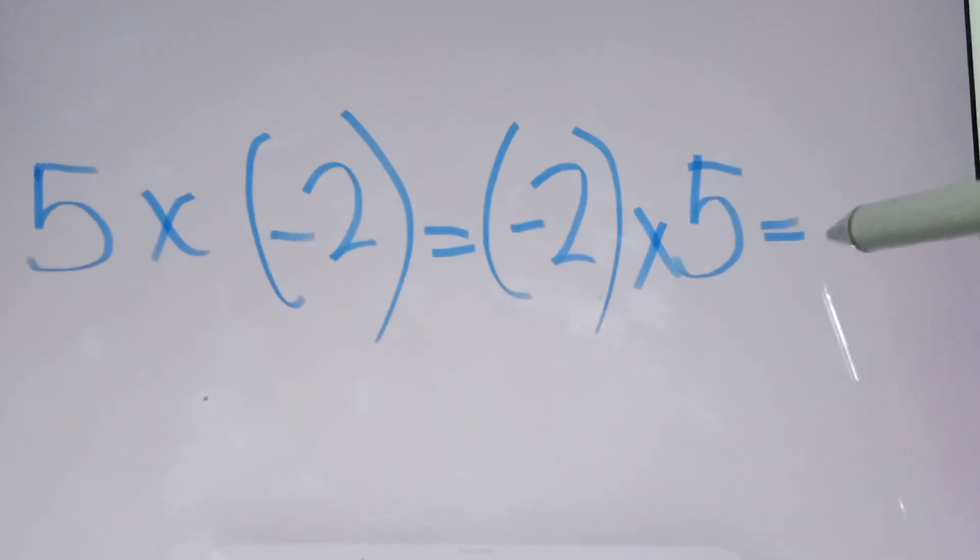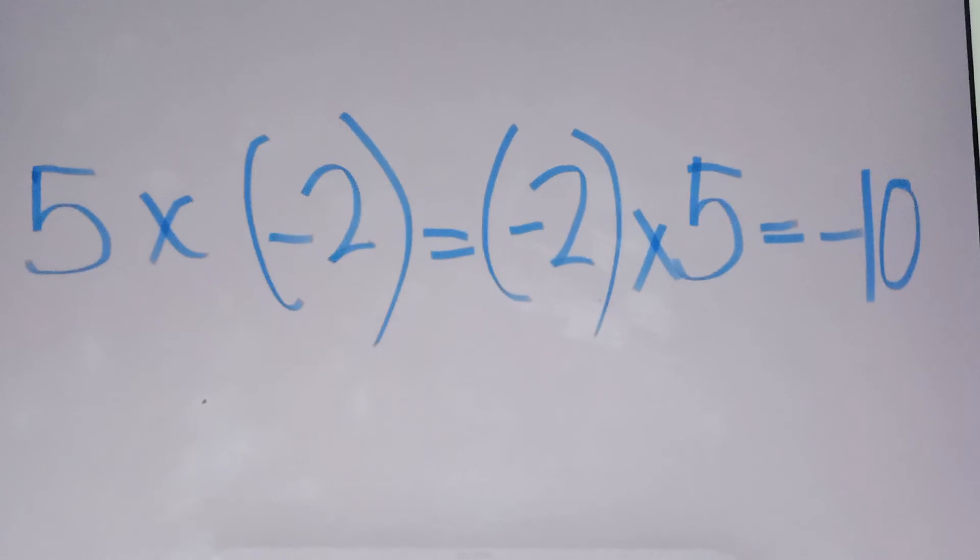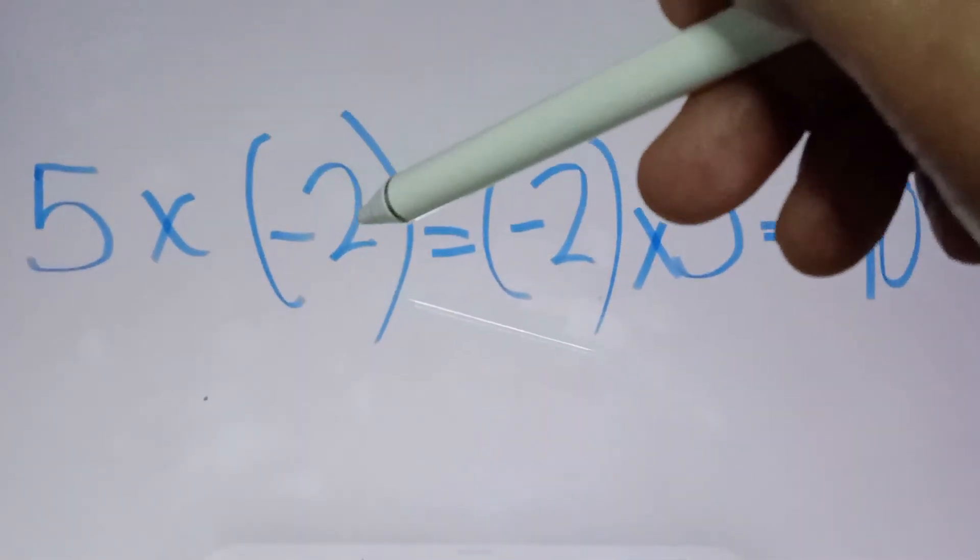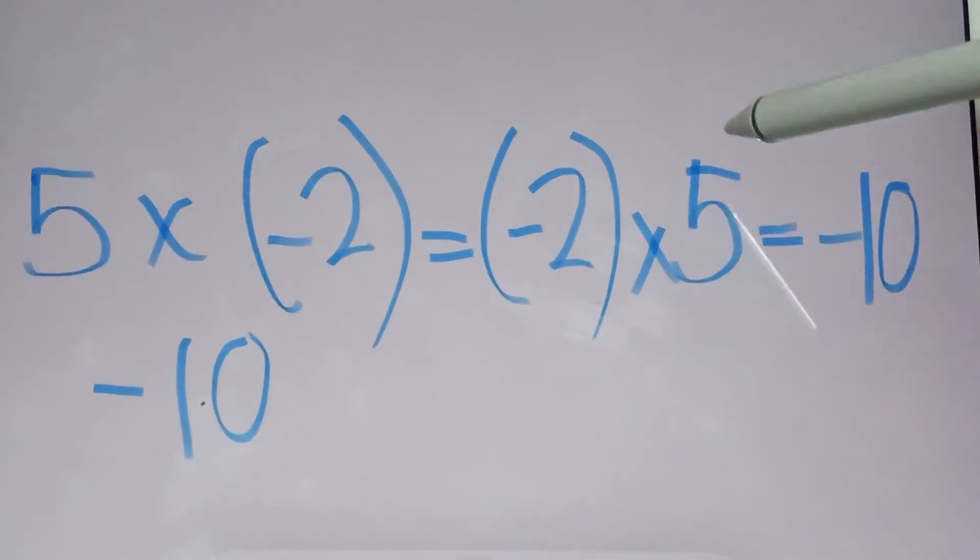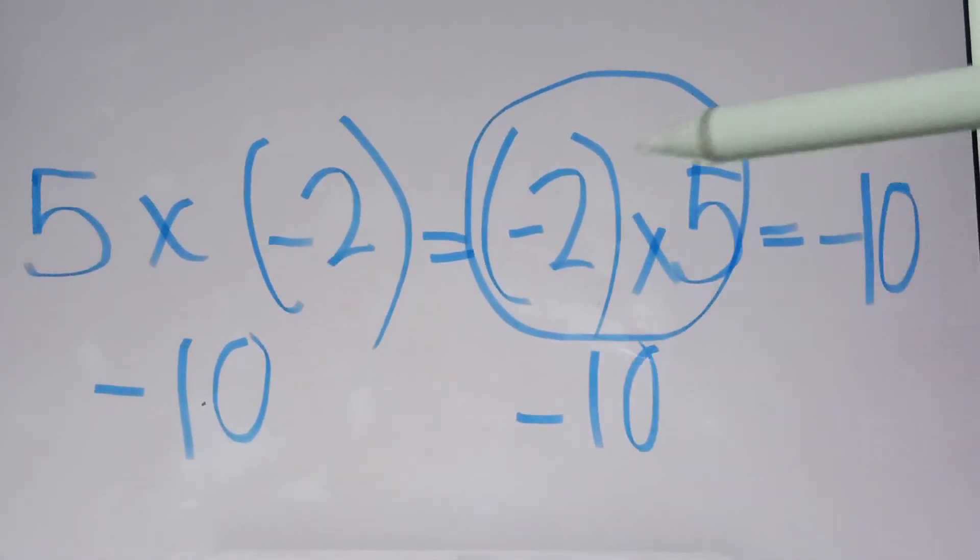And the answer is negative 10. Because 5 times negative 2 here is negative 10, and the same is in here. Negative 2 times 5 is also negative 10.